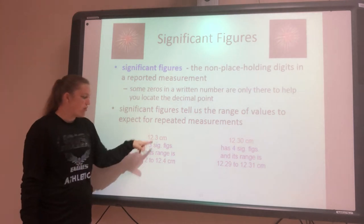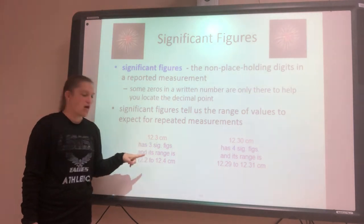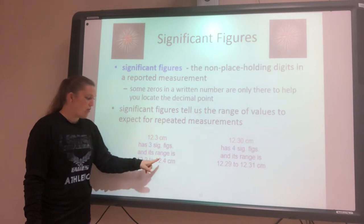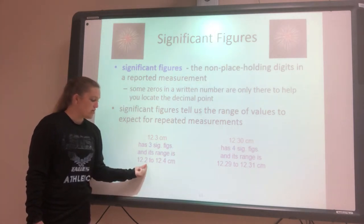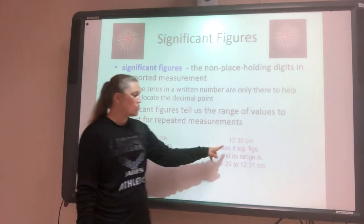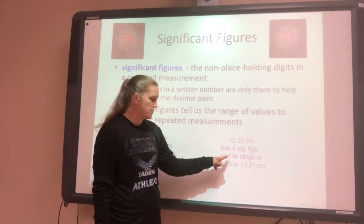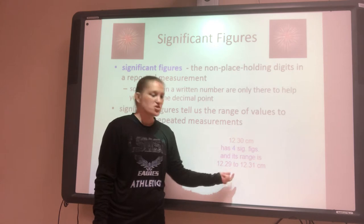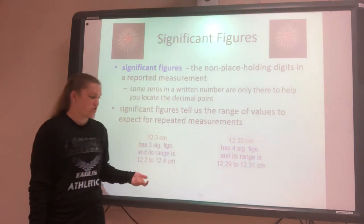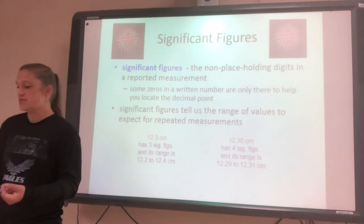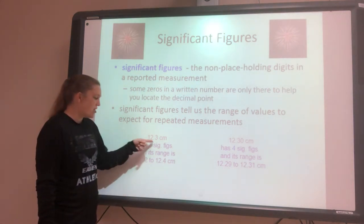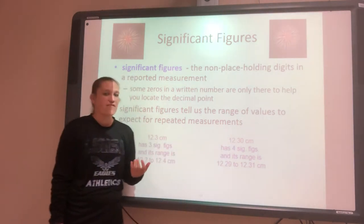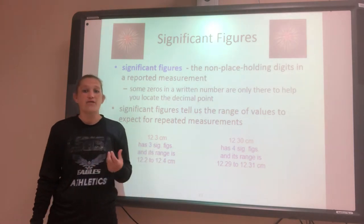For example, 12.3 has three sig figs — and we'll go through all the rules — so that means this number has a range from 12.2 to 12.4, only to one decimal place. Whereas 12.30 has four significant figures, and so it has the range of 12.29 to 12.31, going to two decimal places. So you might ask, how do I know how many significant figures a number has? Why does this have three and why does this have four? There are a few rules you use to determine that when you look at a number.